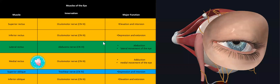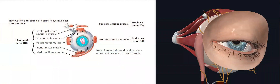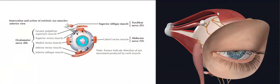Coming back to Netter's illustration, you can find the levator palpebrae superioris — the eyelid elevator — as the highest muscle, then the superior rectus, the superior oblique around its pulley, and the other recti with inferior oblique. All muscles — levator palpebrae superioris, superior rectus, medial rectus — are supplied by oculomotor, apart from the superior oblique by trochlear and the lateral rectus by abducens.